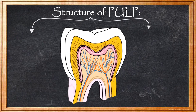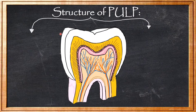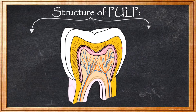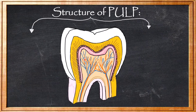Hello everyone! Today's topic is the Structure of Pulp. We saw the basic anatomy of pulp in the last video, where we divided the pulp into Coronal Pulp, Radicular Pulp, and two more parts: accessory canals and the Apical Foramen. Today we are going to see the depth of pulp so that we can relate to the significant clinical features present during Pulpal or Tooth ache.